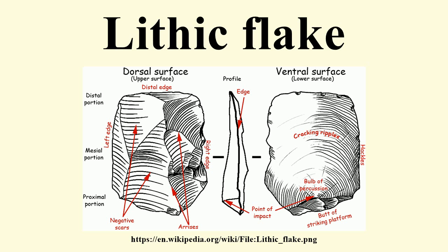The energy of this blow propagates through the material, often producing a hertzian cone of force which causes the rock to fracture in a controllable fashion. Since cores are often struck on an edge with a suitable angle for flake propagation, the result is that only a portion of the hertzian cone is created. The process continues as the flint napper detaches the desired number of flakes from the core, which is marked with the negative scars of these removals.